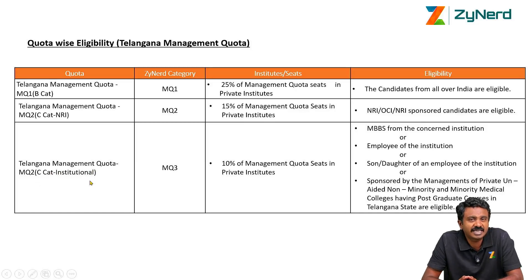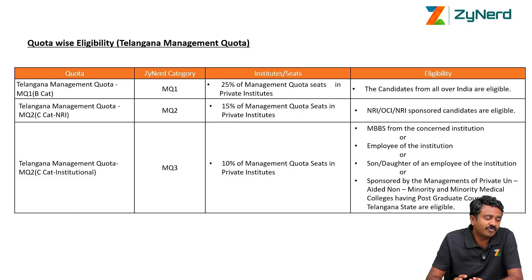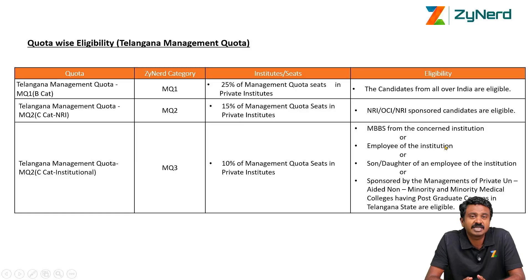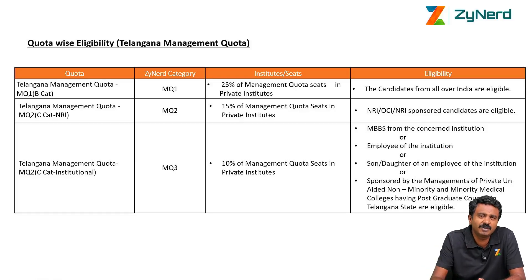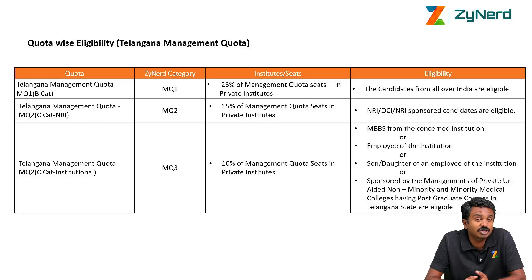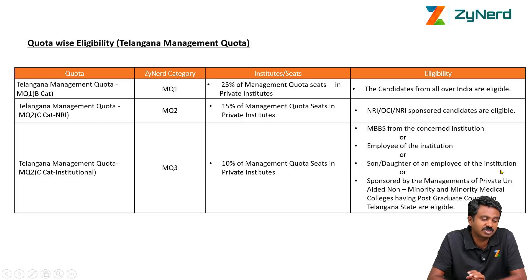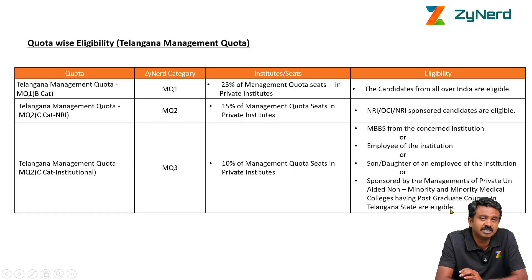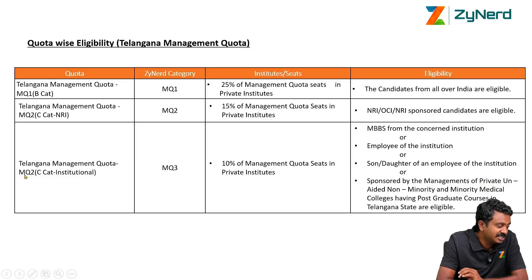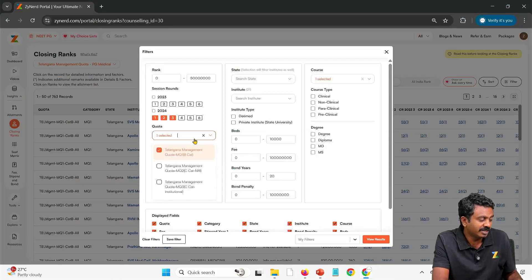Then you have Telangana Management Quota MQ3 — CCAT seats under institutional quota. This is a specific category for those who have completed MBBS from the concerned institution. If you have completed MBBS from a particular institution, you are eligible for PG in that institution if the institute recommends or sponsors you. If you are an employee of the institution in some capacity — medical officer or any capacity — you are eligible. Sons or daughters of employees of the institution are also eligible, as are candidates sponsored by managements of private or non-minority medical colleges having post-graduate classes. Anybody sponsored under any one of those three criteria, sponsored by the managements of private unaided or private minority medical colleges, is eligible. These three are the sponsorship options.